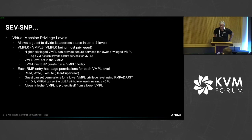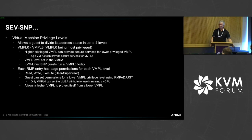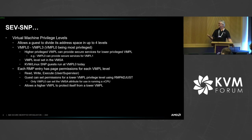A feature of SNP that we're going to use is called Virtual Machine Privilege Levels. This allows a guest to divide the address space up into up to four levels. We have VMPL 0 through 3, with 0 being the most privileged.